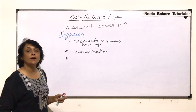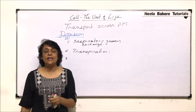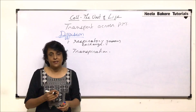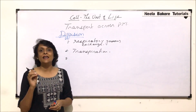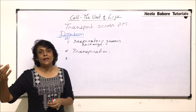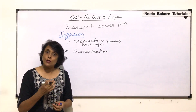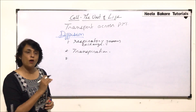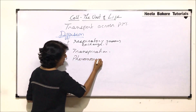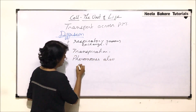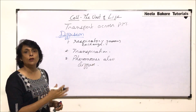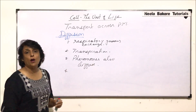In certain insects, pheromones are released to attract the opposite sex. These are chemicals released into the air that diffuse outward, and the other insect detects these pheromones and gets attracted for copulation or reproduction. So pheromones also diffuse.